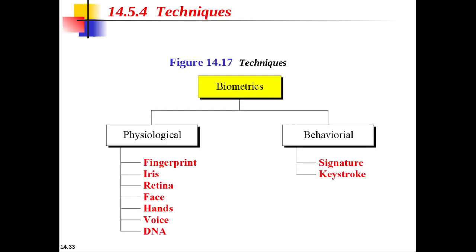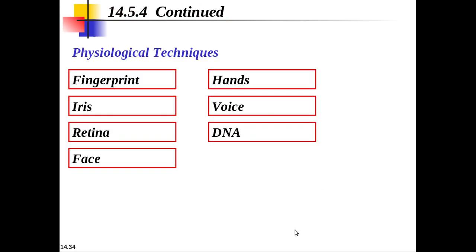There are two types of biometric techniques: physiological and behavioral. Physiological techniques measure physical traits of the human body, while behavioral techniques measure human behavior traits to ensure the claimant behaves normally and does not impersonate someone else. In physiological techniques, fingerprint shows high accuracy and supports both verification and identification, but may be altered due to injury or aging. Iris records a unique pattern within the iris for each person, but can be altered by diseases such as cataracts.